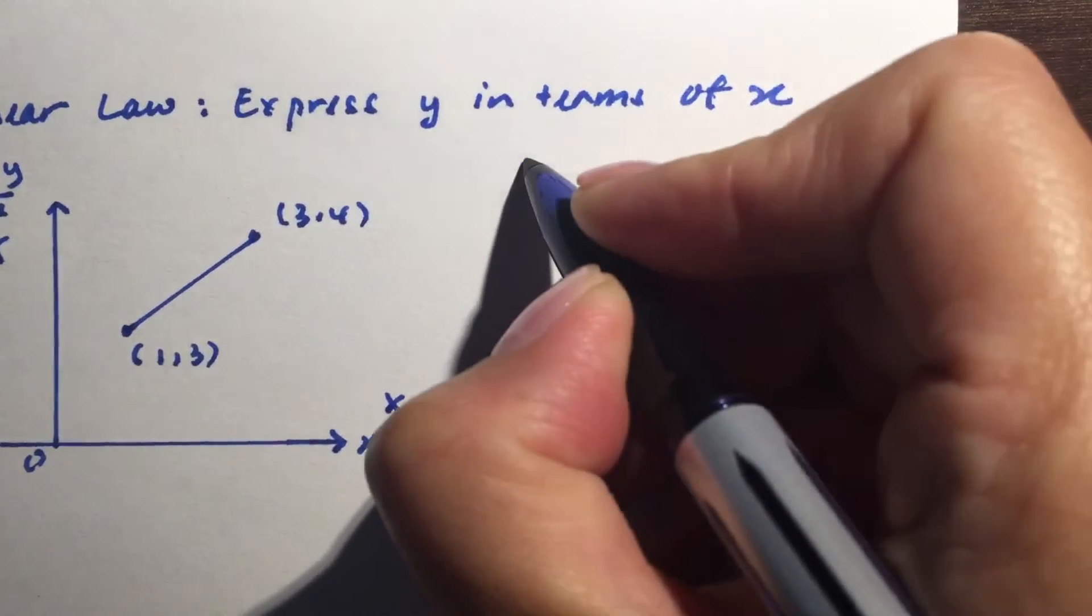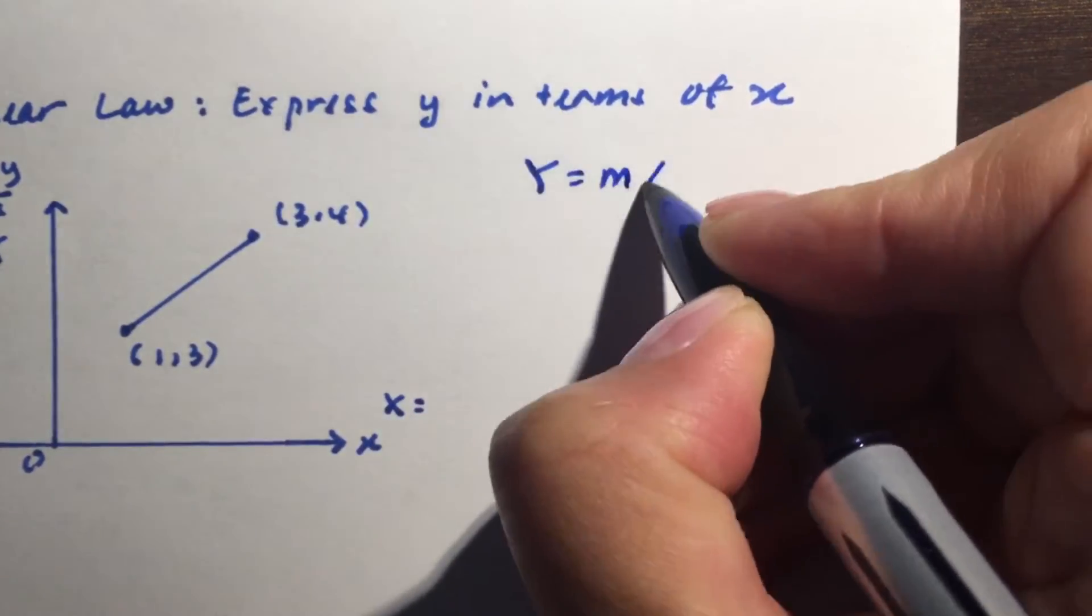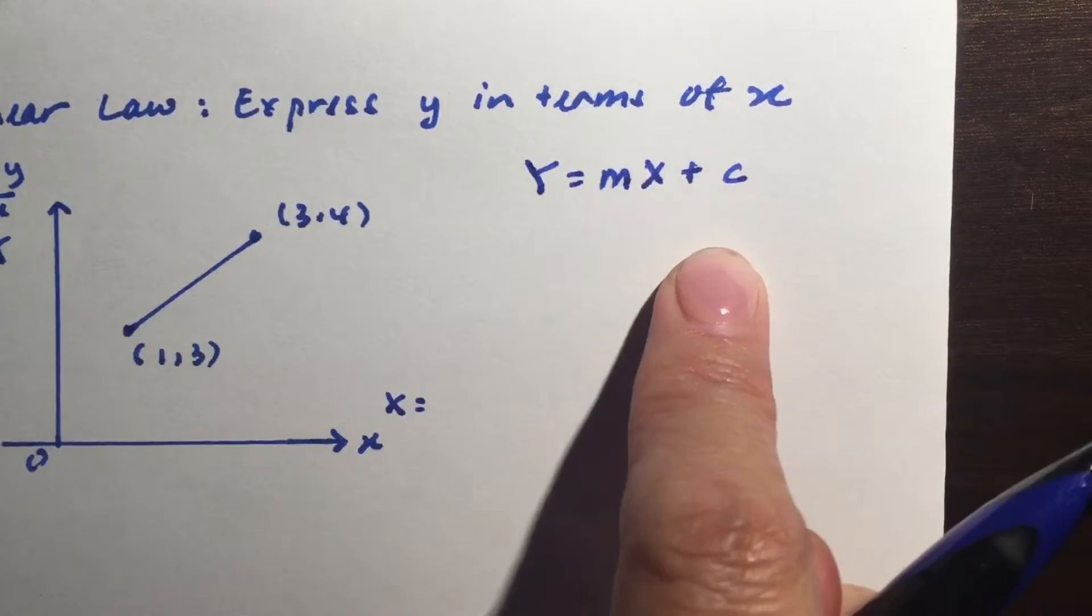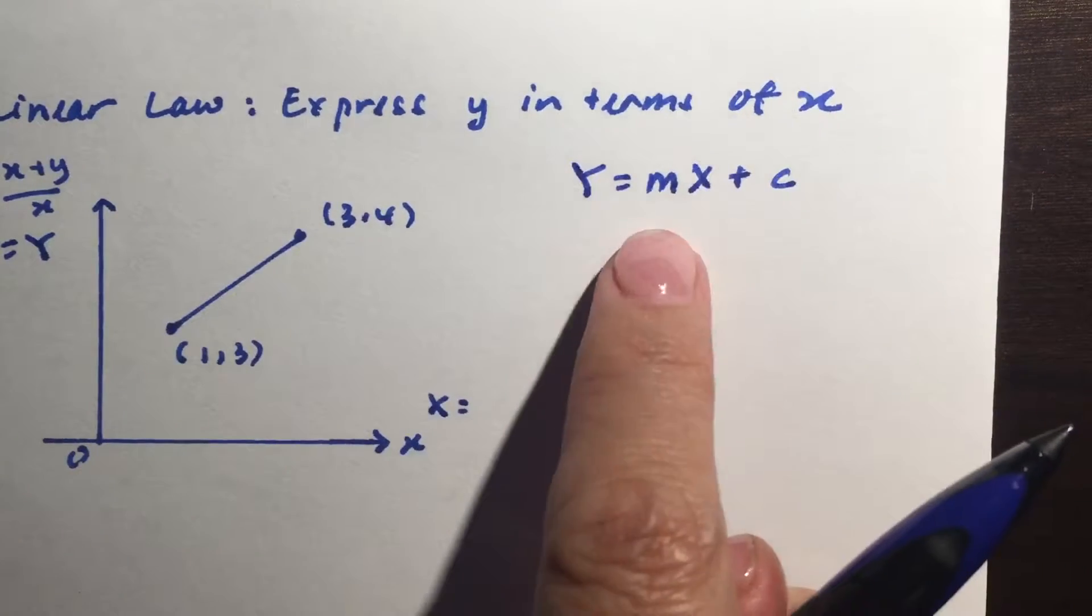So you have to understand that no matter what, for any linear law we actually have big Y equals m big X plus c. So we will start with this. In any case we always start with the gradient then we find the intercept.